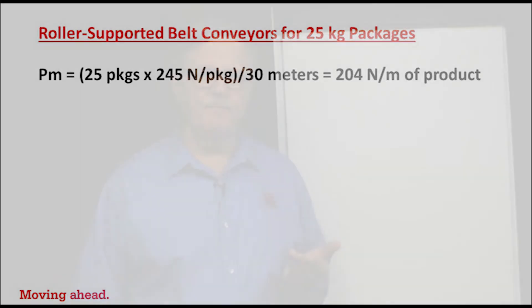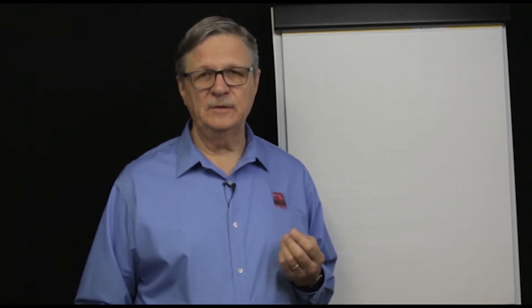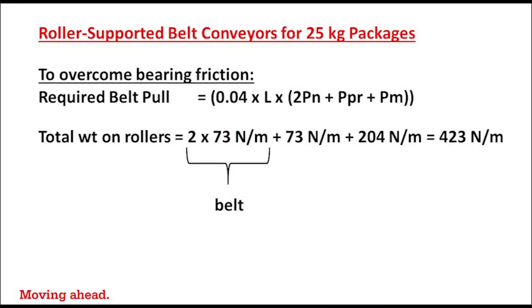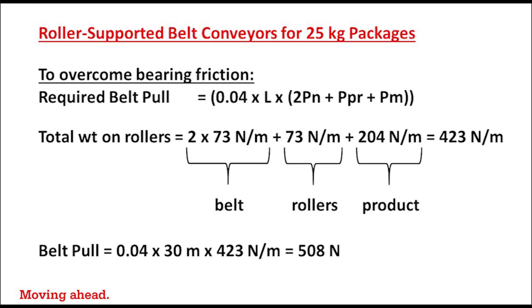Now we can sum the three components needed to calculate required pull to overcome frictional drag. We multiply 2 times 73 to get the weight per meter of the belt, add 73 for the weight per meter of the rotating parts, and add 204 newtons per meter for the product. We multiply that sum against the conveyor length of 30 meters, then multiply by 0.04 to represent frictional drag in the bearings, giving us a required belt pull to overcome frictional drag of 508 newtons.